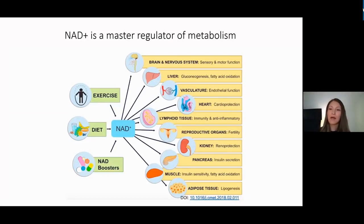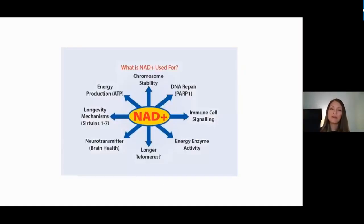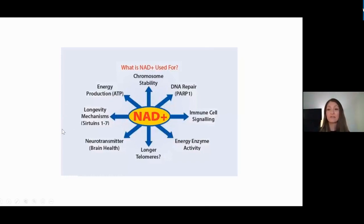NAD plays a crucial role across a plethora of organs. At the molecular level, NAD is implicated in chromosome stability and DNA repair, serving as a substrate for different molecular players such as PARPs — a very important family of enzymes regulating DNA repair — and sirtuins, which play a role in longevity mechanisms.